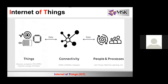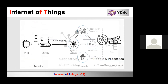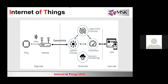At one end there is things, in the middle there is connectivity, and at the end there are people and process. What we need is something called a gateway. The gateway is connected to a sensor, the sensor is connected to the cloud, which stores and shares the data. On the other end there is an app.